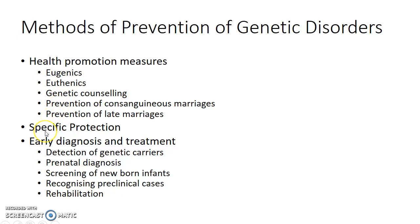Specific protection includes prevention of exposure to mutagens like X-rays, ionizing radiations, and other chemical mutagens. Early diagnosis and treatment includes detection of genetic carriers, prenatal diagnosis, screening of newborn infants, recognizing preclinical cases, and rehabilitation of patients suffering from genetic conditions.